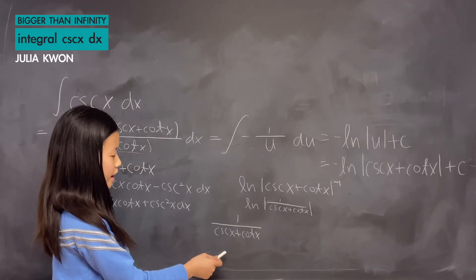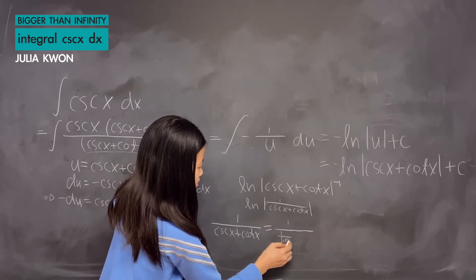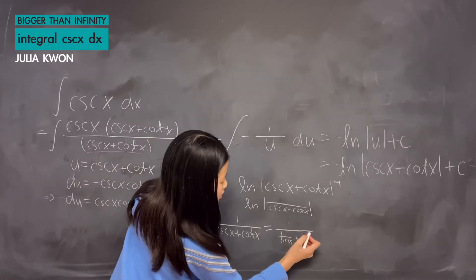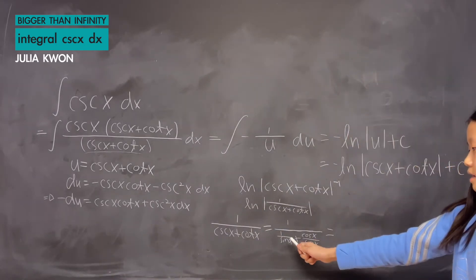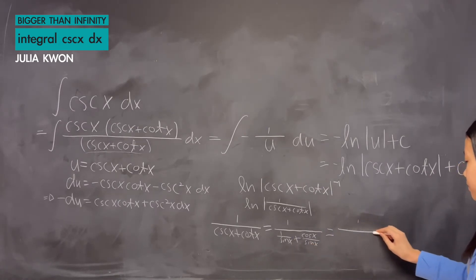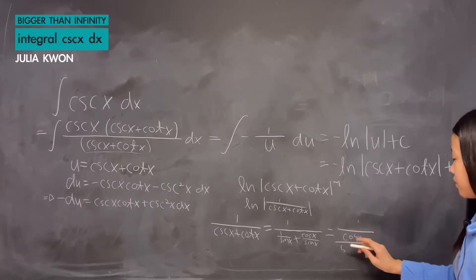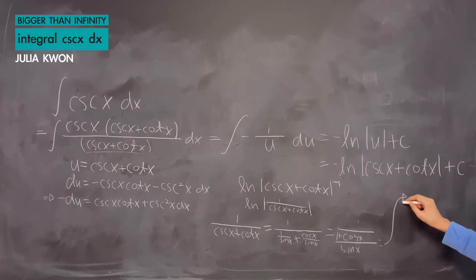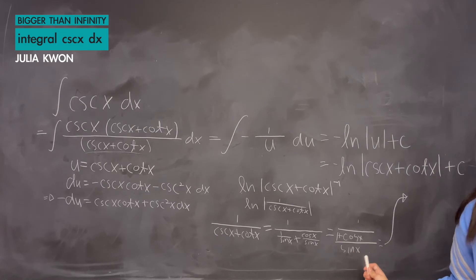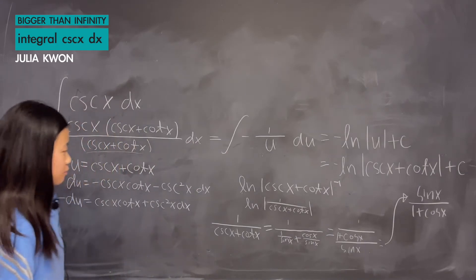We know that cosecant x equals 1 over sine x, and cotangent x equals cosine x over sine x. Adding these two fractions gives us (1 plus cosine x) over sine x. So 1 over (cosecant x plus cotangent x) equals 1 over ((1 plus cosine x) over sine x), which equals sine x over (1 plus cosine x).